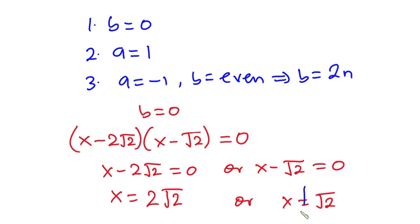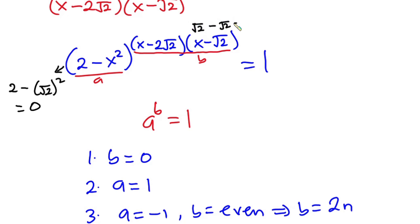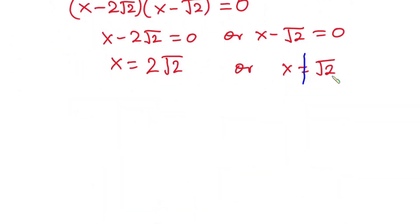Now, x cannot equal √2 because if x equals √2, then the base becomes 2 minus (√2)² which equals 2 minus 2, giving 0. So we would get 0 to the power 0, which is indeterminate. Therefore x equals √2 is rejected, and x equals 2√2 is a valid real solution.